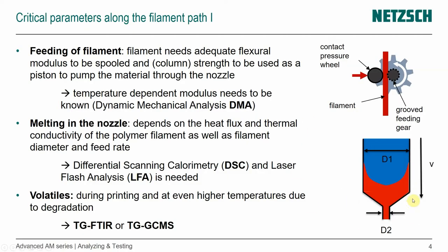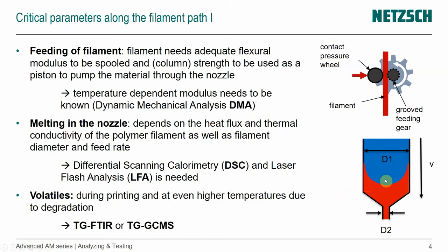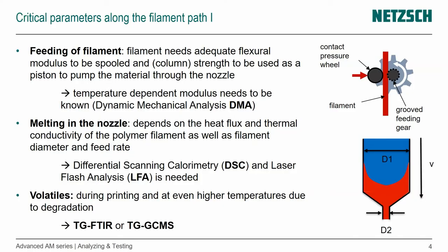Now we're looking at the melting behavior in the nozzle. The melting really depends on the heat flux, the thermal conductivity of the polymer filament, as well as the filament diameter and the feed rate. Heat conduction goes from the wall to the center. The thicker the material — so a 2.85 mm filament — will need more time to melt than a 1.75 mm filament. If we push really fast, we don't allow our material enough time to be melted. In order to understand that, differential scanning calorimetry, DSC, and laser flash analysis, LFA, are crucial.